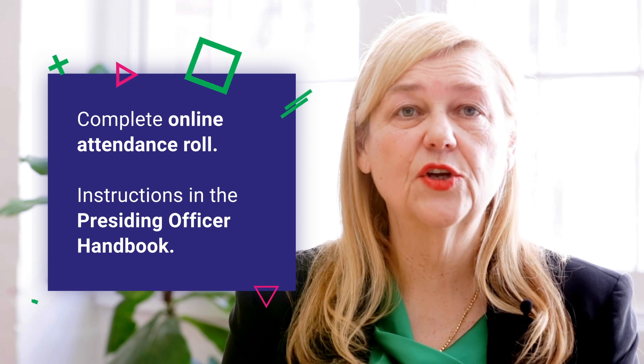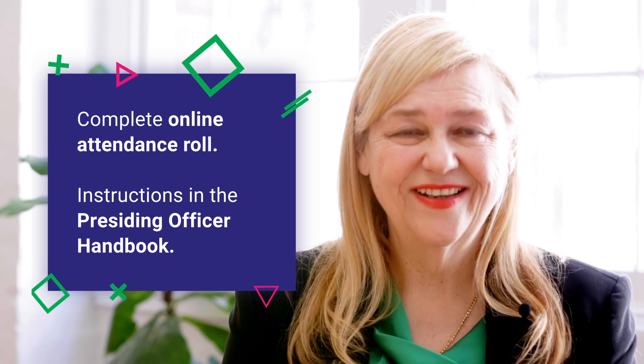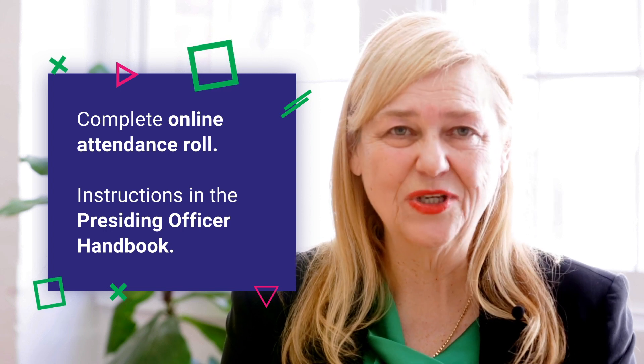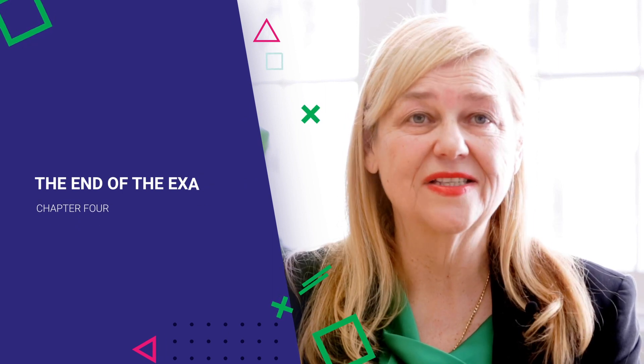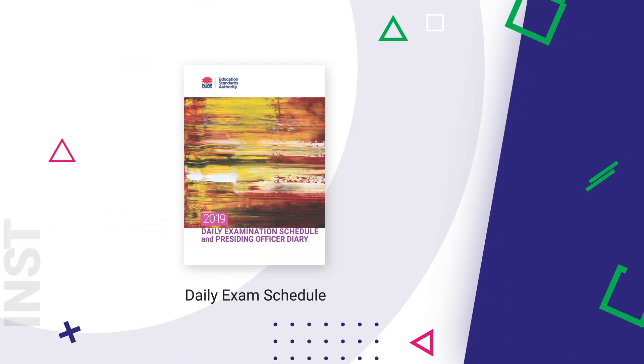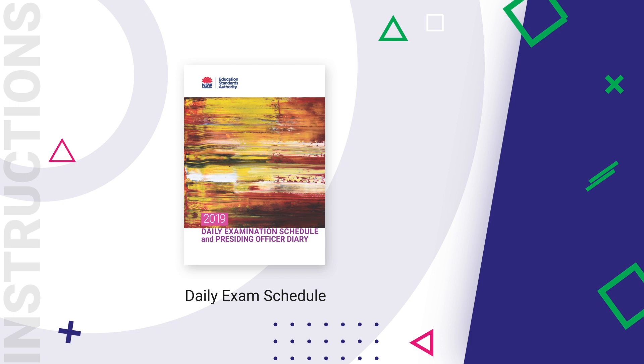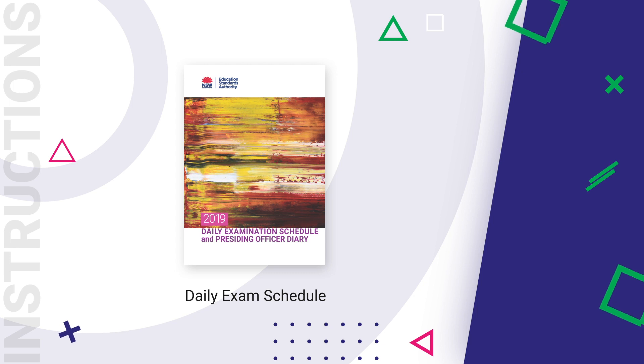During the exam, you will need to complete the online attendance roll — instructions for doing this are in the handbook. The computer will time each student's exam so that it takes exactly two hours. If a student finishes early, they should raise their hand and alert the supervisor before they submit their responses. Students do not need to complete any paperwork at the end of the Science Extension examination. When all students have left the exam room, you need to collect any material and store or package it according to the instructions in the daily exam schedule.